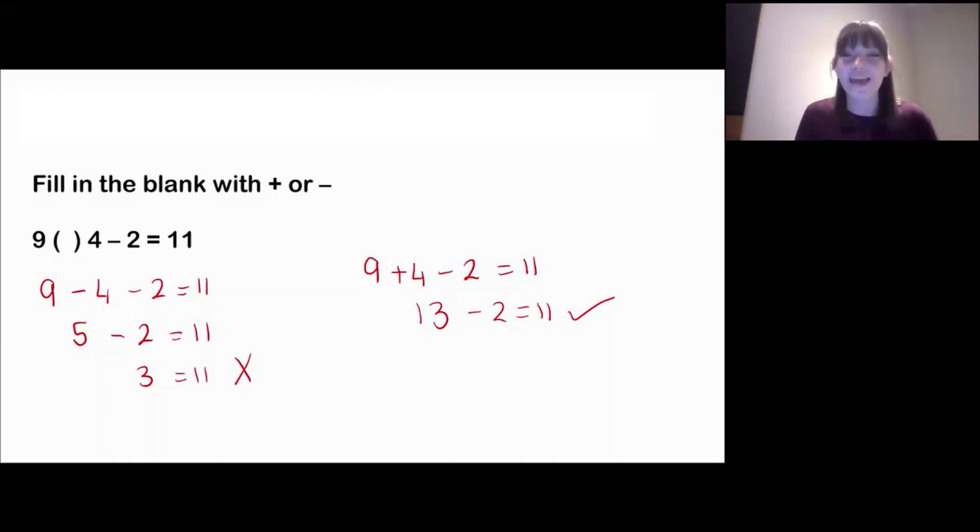Now, there's actually a bit of a hint we can use here to think about which one it might have been without doing any working out, is that we can see our answer 11 is bigger than the number we start with. We start with the number 9, and we finish with our sum, the number 11, which is bigger than the number 9.